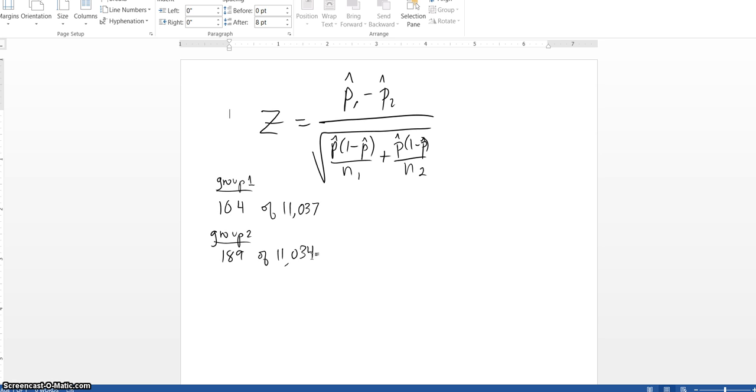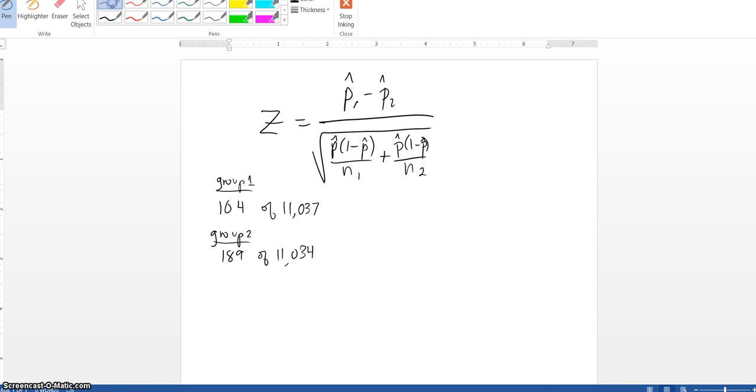Okay, so P1. In group 1, we had 104 out of 11,037 have heart attacks. So our P1 hat is going to be equal to 104 over 11,037.